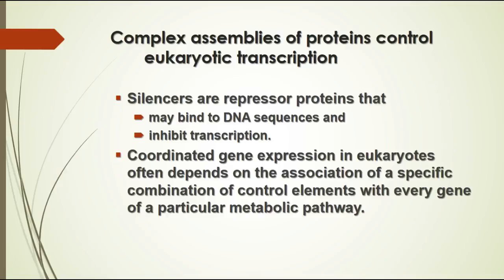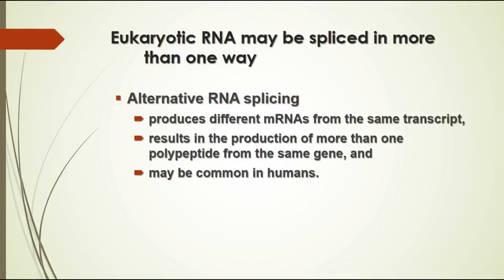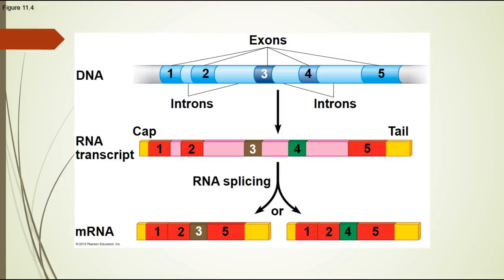There are also silencers — repressor proteins that can inhibit transcription. So there are many different factors involved in coordinating gene expression in eukaryotes, often including a number of different control elements in metabolic pathways. Additionally, RNA in eukaryotes must be spliced and can be spliced differently, producing different RNAs from the same transcribed portion, resulting in more than one protein from the same gene — which is probably common in humans. Depending on which exons are spliced together and which introns are removed, you can end up with different messenger RNA products from the same transcribed portion of DNA.